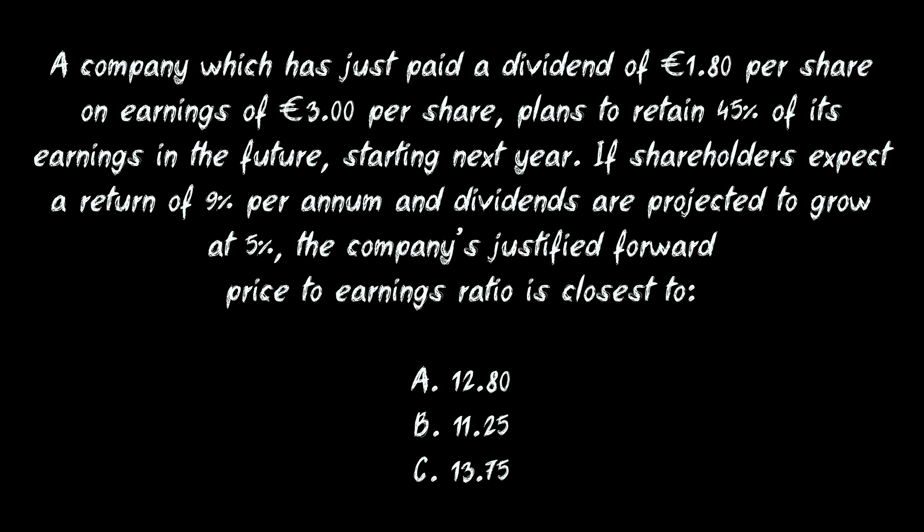If shareholders expect a return of 9% per annum and dividends are projected to grow at 5%, the company's justified forward price to earnings ratio is closest to 12.8, 11.25 or 13.75.